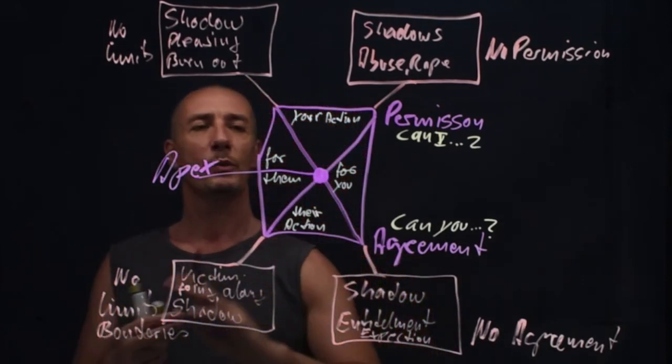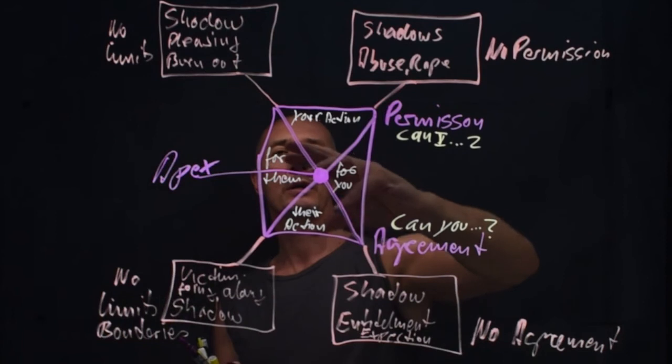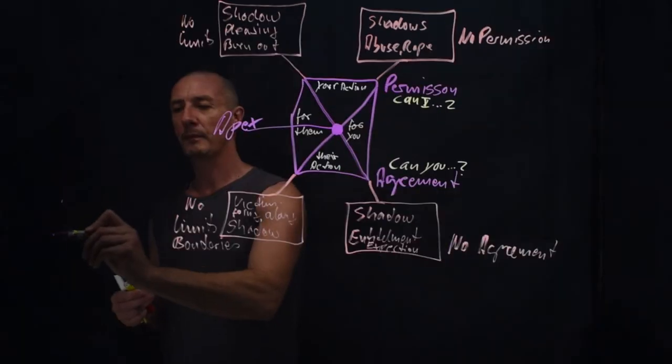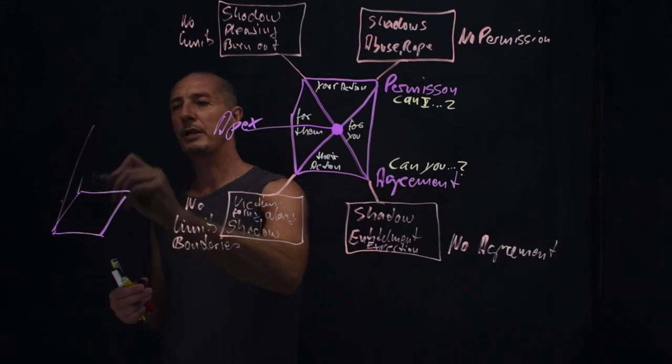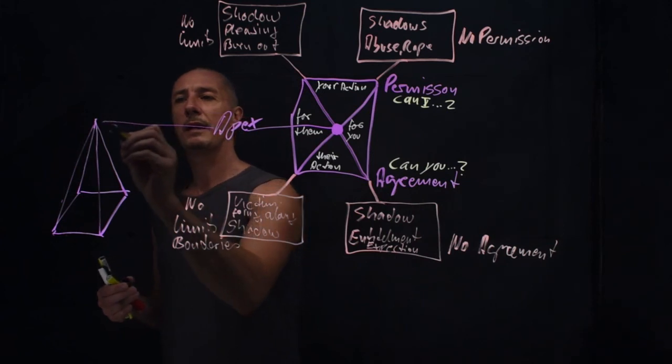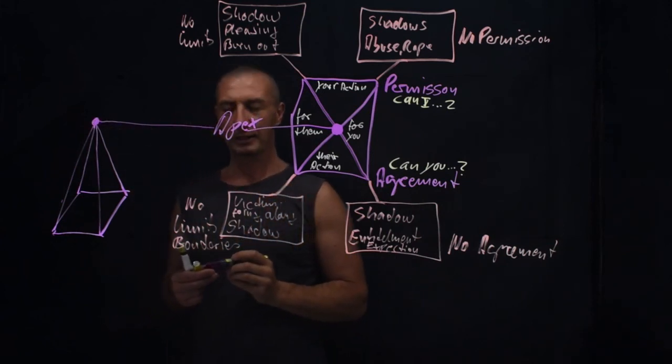So when you turn this dynamic 90 degrees, you create literally a three-dimensional structure like a pyramid. And when I'm talking about the apex, I'm talking about this little spot. And this little spot,